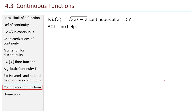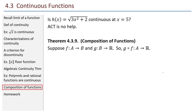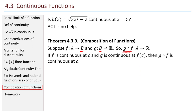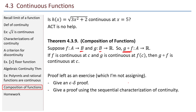One last consideration: h of x equals the square root of 3x squared plus 2. Is that function continuous at x equals 5? The algebraic continuity theorem doesn't address square roots, so we need something that handles composition of functions. Theorem on composition: suppose f goes from A to B and g goes from B to the reals, so g of f goes from A to the reals. If f is continuous at C and g is continuous at f of C, then the composition g of f is continuous at C. The author leaves the proof as an exercise, requiring both an epsilon-delta proof and a proof using the sequential characterization of continuity.